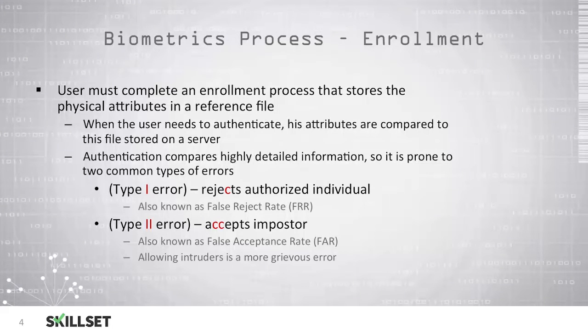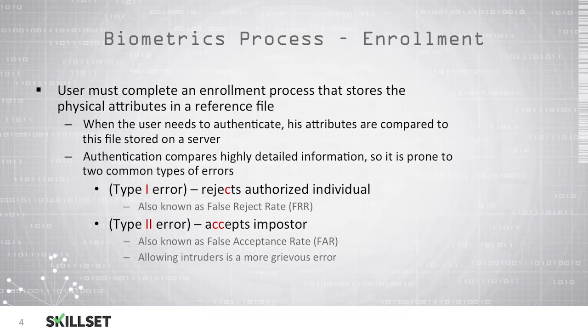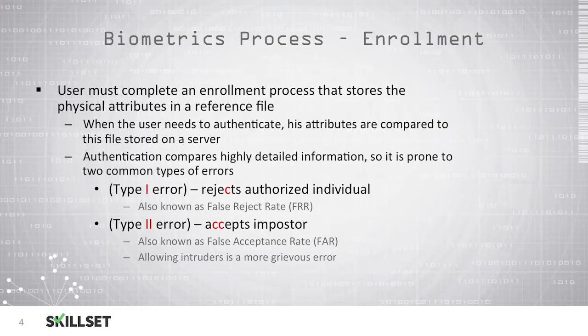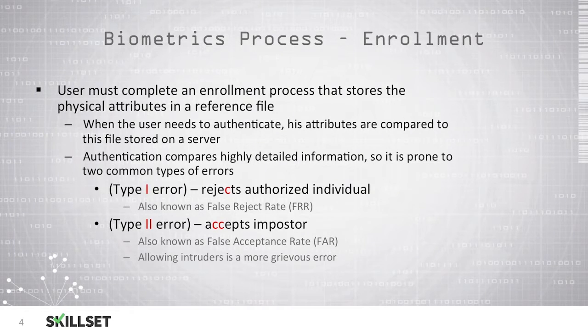A type 2 error is where we accept an imposter — an individual who should not have access to our system is granted access in error. This is also known as the false acceptance rate, or FAR.